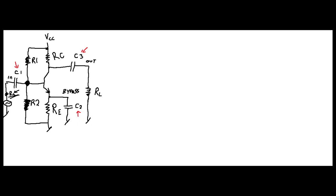Now let's start talking about the output critical frequency, FCL_output — again, L stands for lower, C for critical frequency. We just did the input, so now we're going to do the output. The output critical frequency utilizes the load resistor, the output coupling capacitor C3, and the collector resistor.